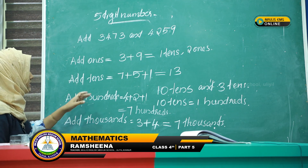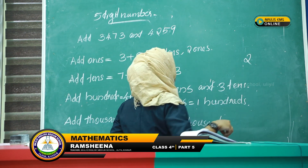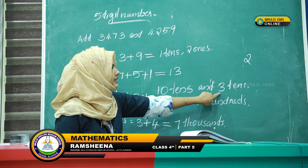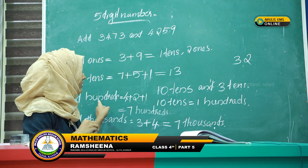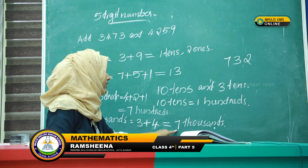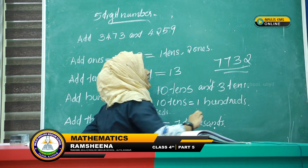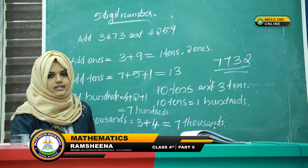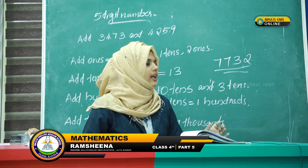So the answer is: 2 ones, 3 tens, 7 hundreds, and 7 thousands — the answer is 7,732.